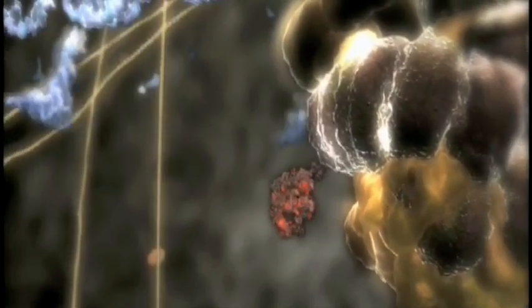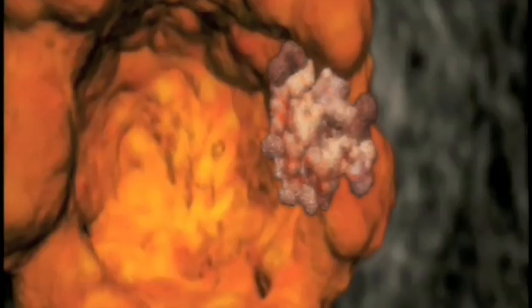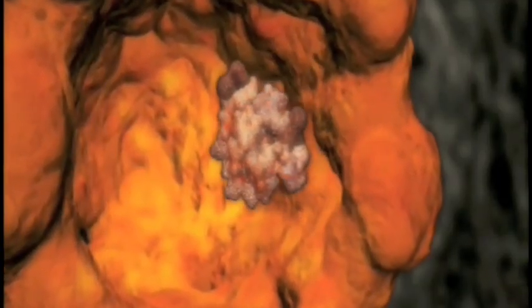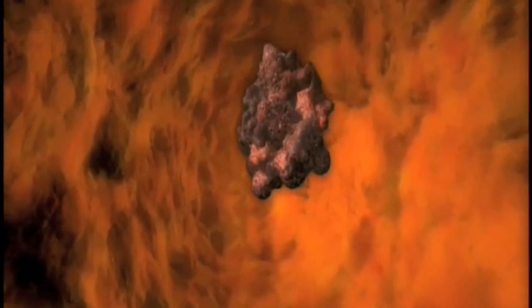When the construction of the chain is complete, it is transported to a barrel-shaped machine that helps fold it into the precise shape required to perform its function.